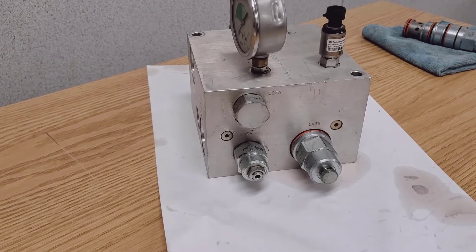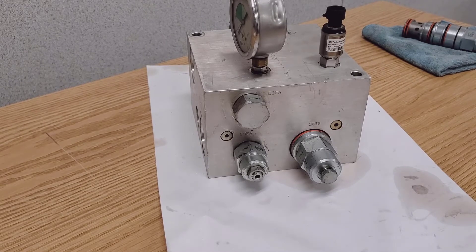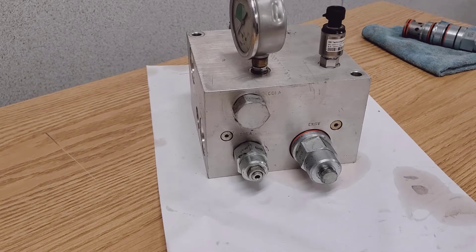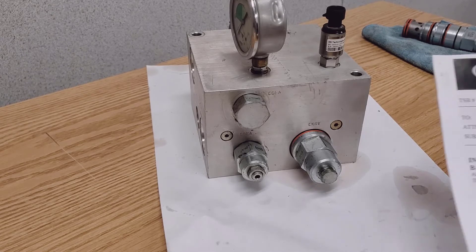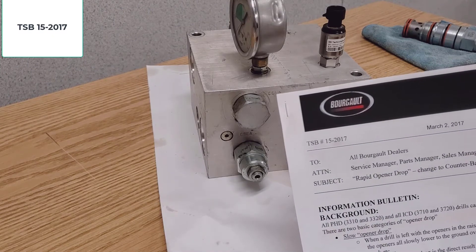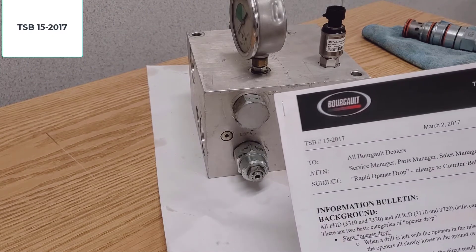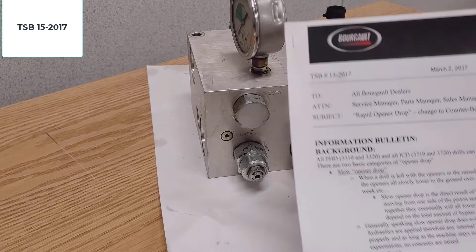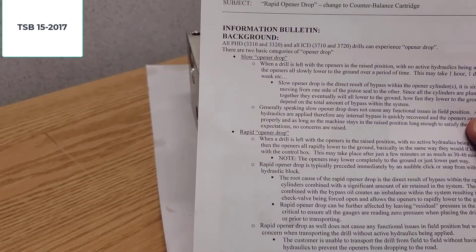So we produced a bulletin, came up with a bit of a band-aid fix because it can be very hard to identify where the small leaks are in the circuit. So we released TSB 15 of 2017. It identifies a bunch of things you should look for.